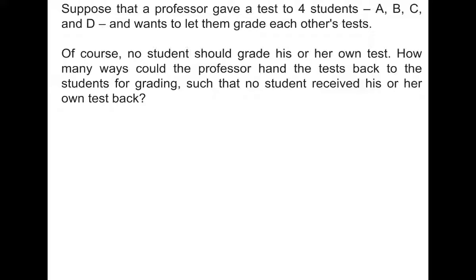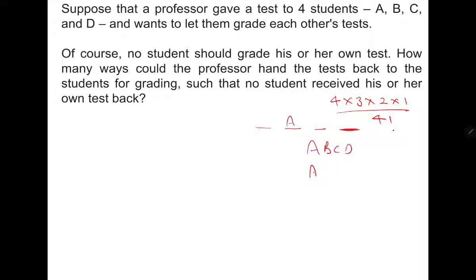First, let's see how many total possibilities there are. Four students and four tests are there. Test A can be given to any of the four students — four possibilities. Then test B has three remaining possibilities, then two, then one. So total possibilities are four factorial, which is 24. You can write down all 24 permutations — for example A, B, C, D or A, C, B, D and so on. Out of 24 permutations you just need to remove those cases where A comes at the first position, B at the second, C at the third, or D at the fourth.